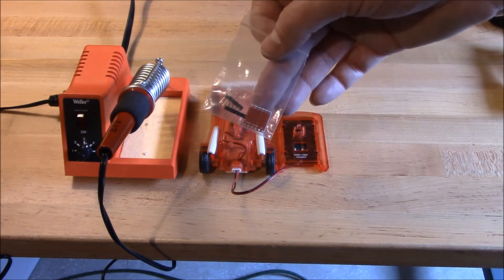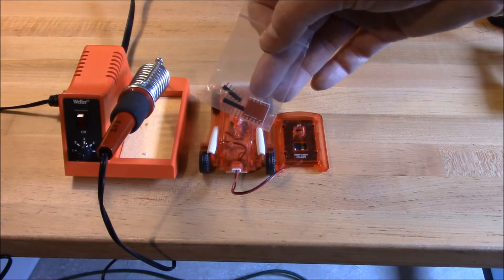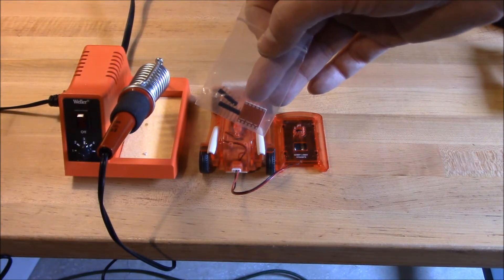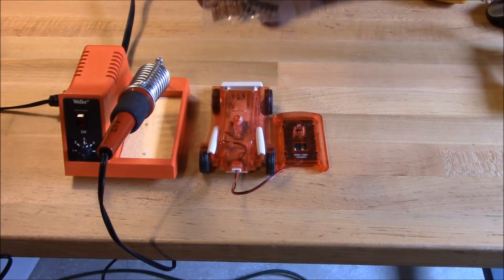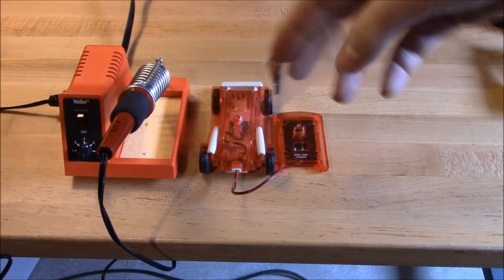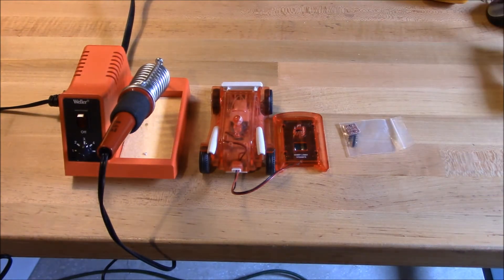And the other job is I have some of these logic level converters that change 3.3 volt to 5 volt logic levels for microcontrollers. And we're going to solder some header pins on, and this is some pretty fine detailed work. We can show how this iron worked great for both those applications.